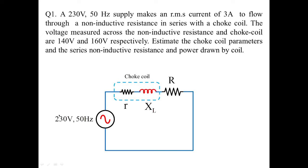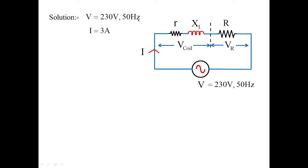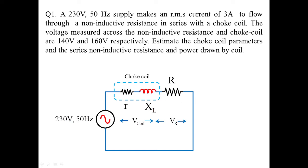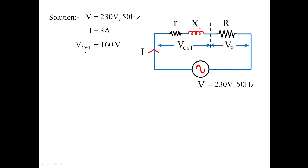The given values are 230 volts at 50 hertz frequency, and the voltage across the choke coil is 160 volts while the voltage across the resistance is 140 volts. Reframing the circuit: the input supply is 230 volts at 50 hertz, current is 3 amperes, the coil voltage is 160 volts, and the non-inductive resistance has a voltage drop of 140 volts.